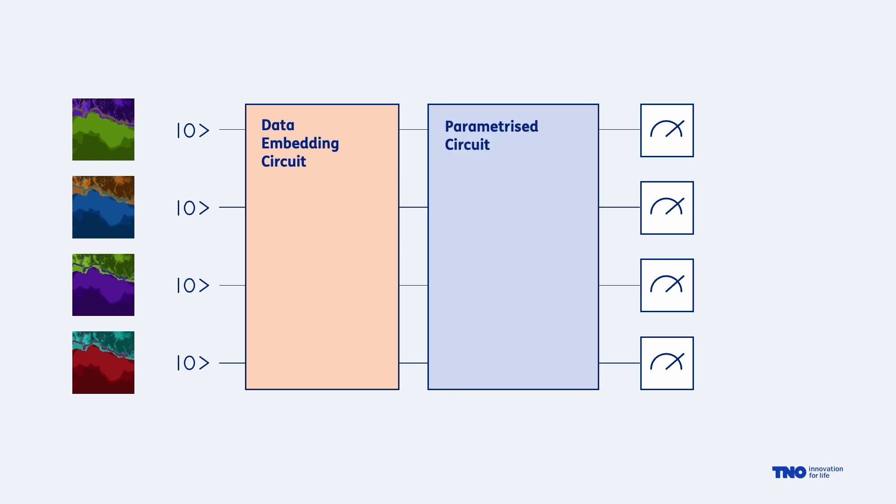Now we add this blue block to the circuit. This block consists of parametrized gates which for now somewhat arbitrarily modify the input data. You can think of this block as the quantum version of an initial structure for a neural network with randomly initialized weights. So for now we get a somewhat random result as the output of the circuit which you can then translate to water depth in meters.